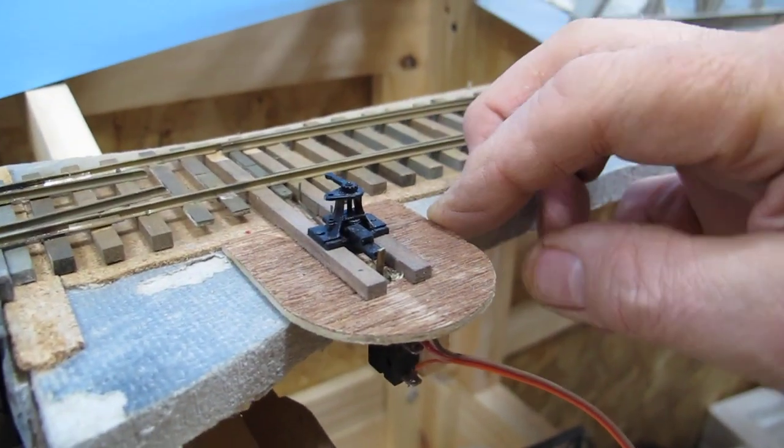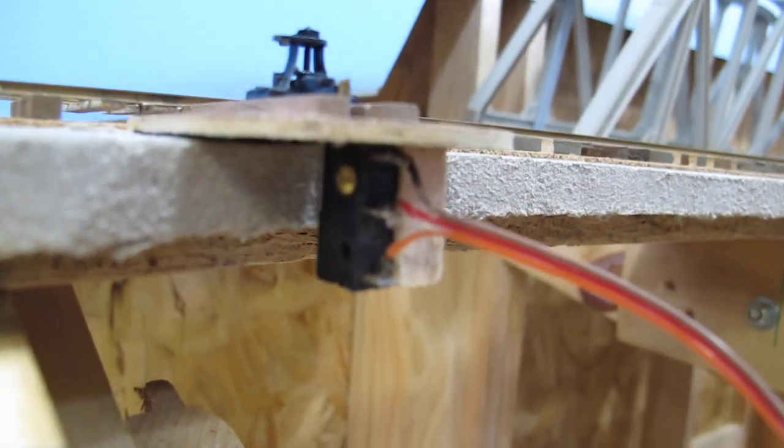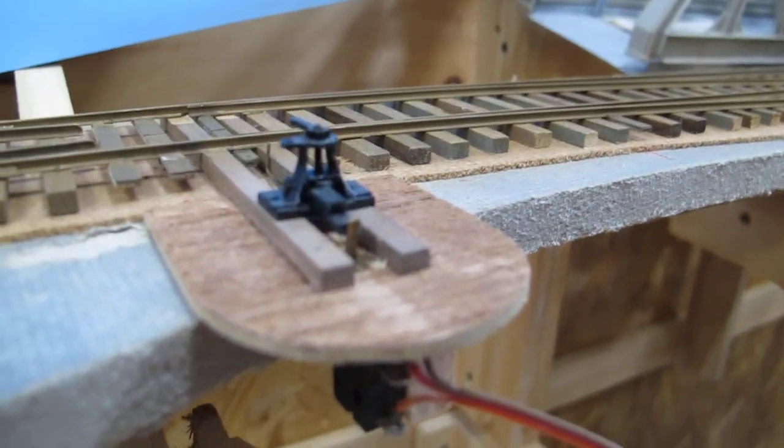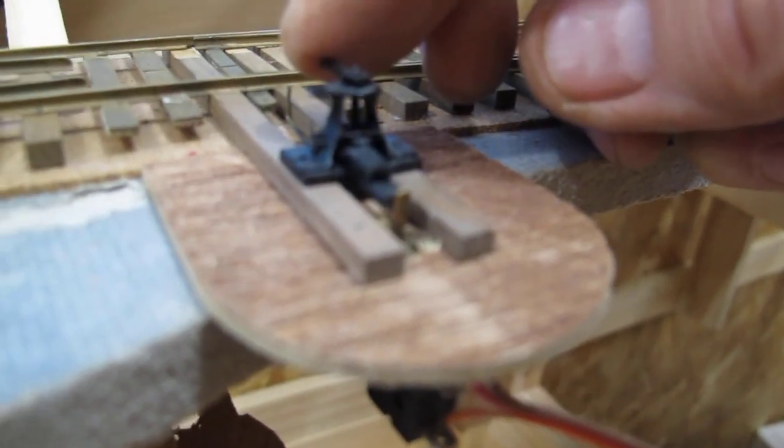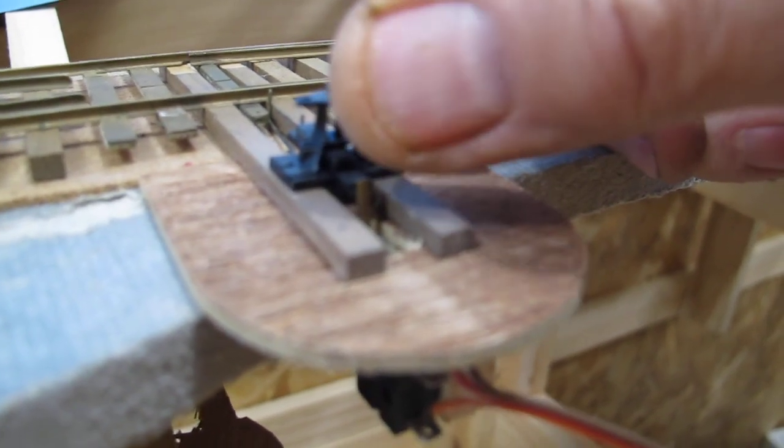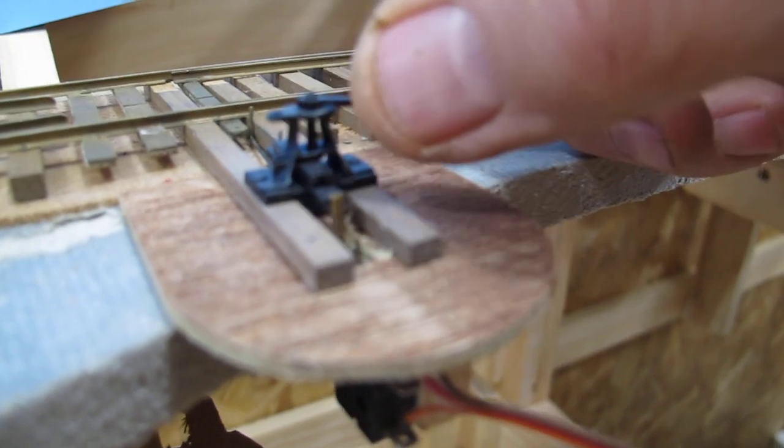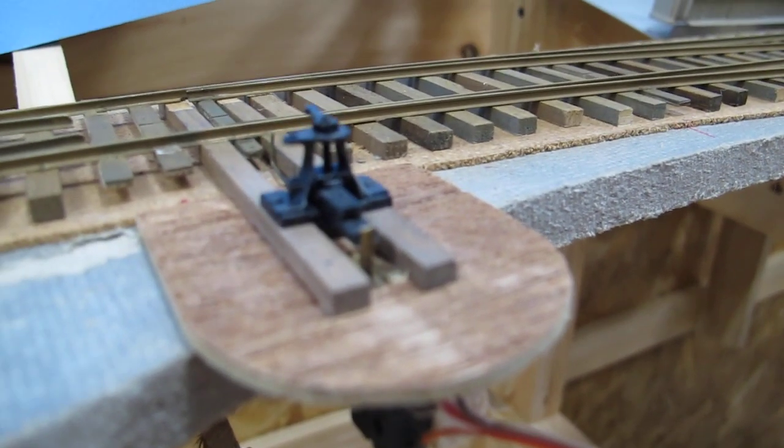Okay, this is a little switch stand and it's got the micro switch underneath it. There's a little bar that sticks up through the hole right there. It's a little out of focus. And what happens is when you turn this, just listen to the click of the switch.